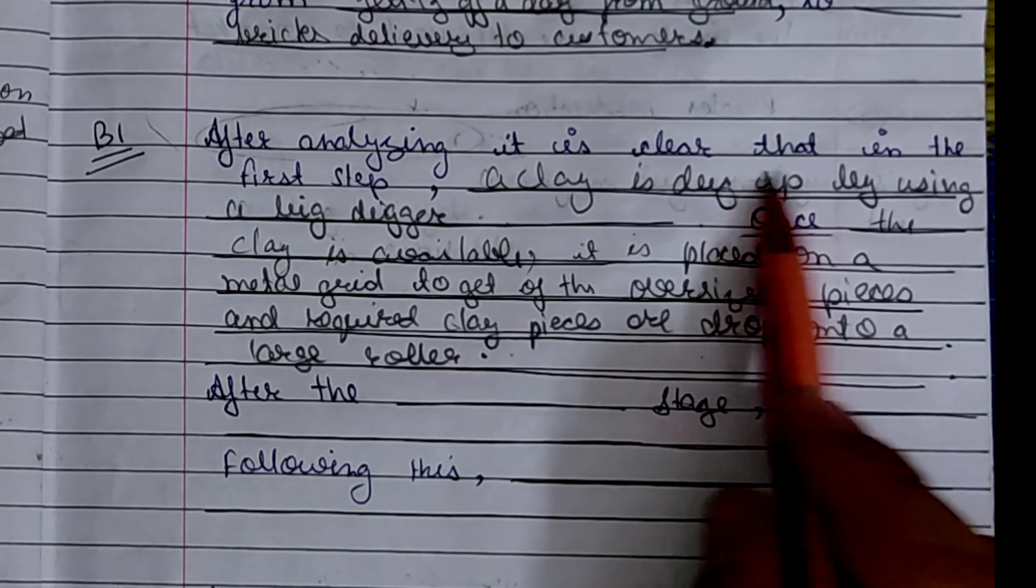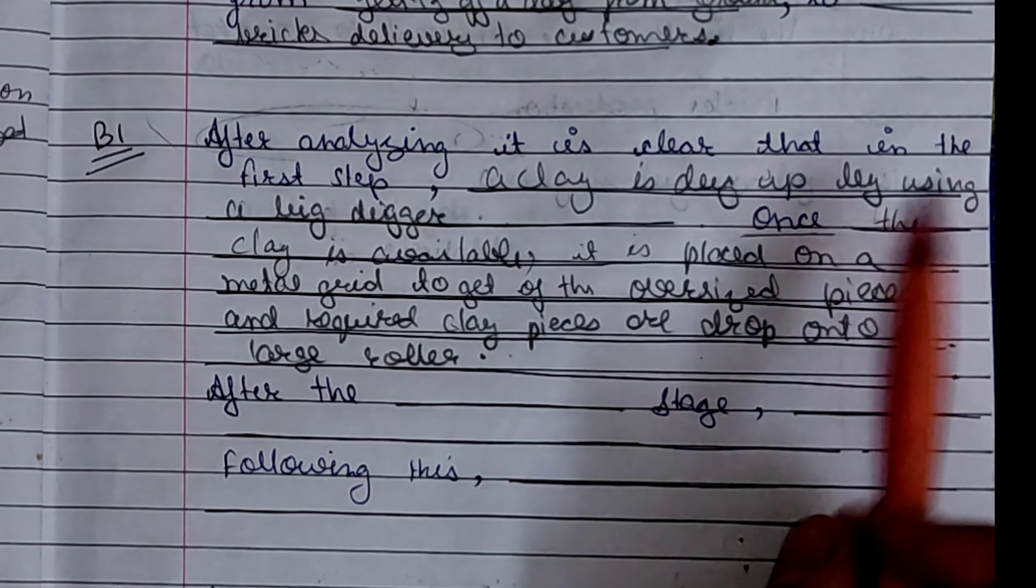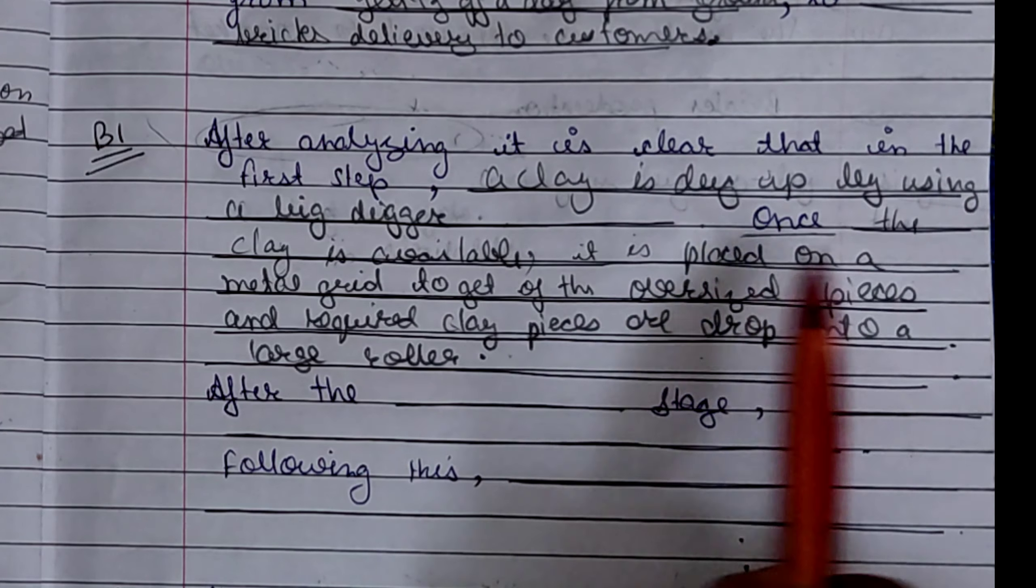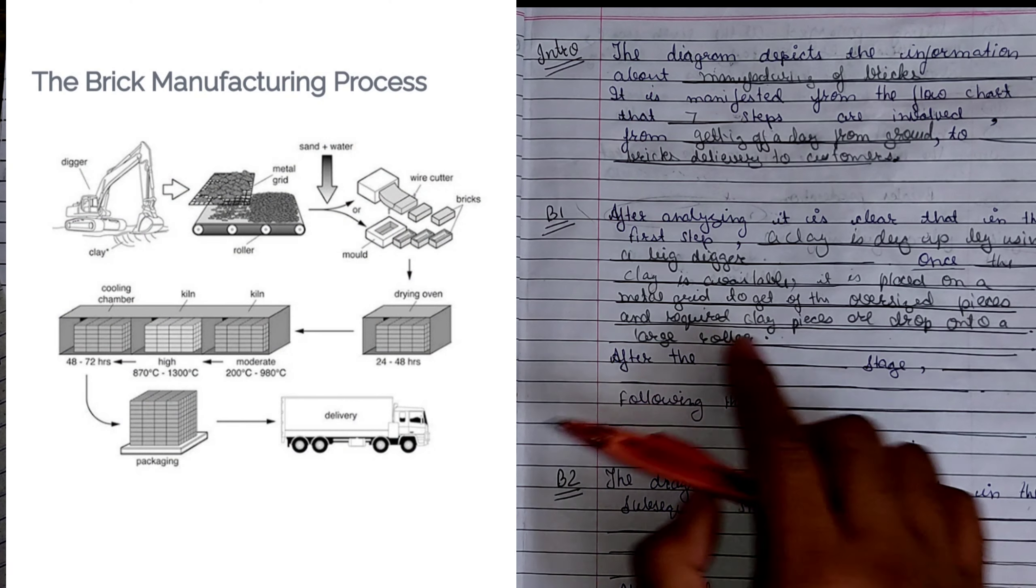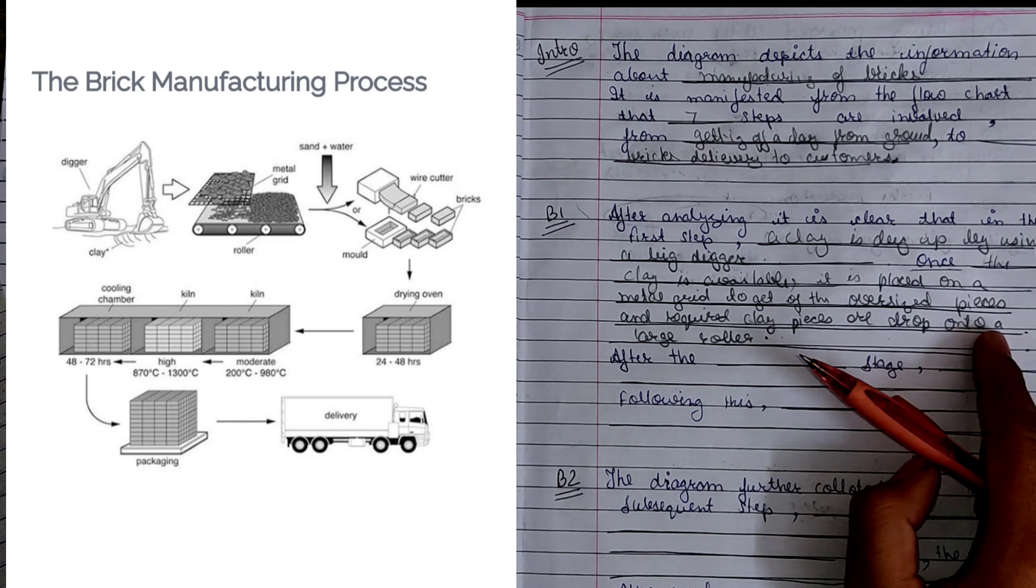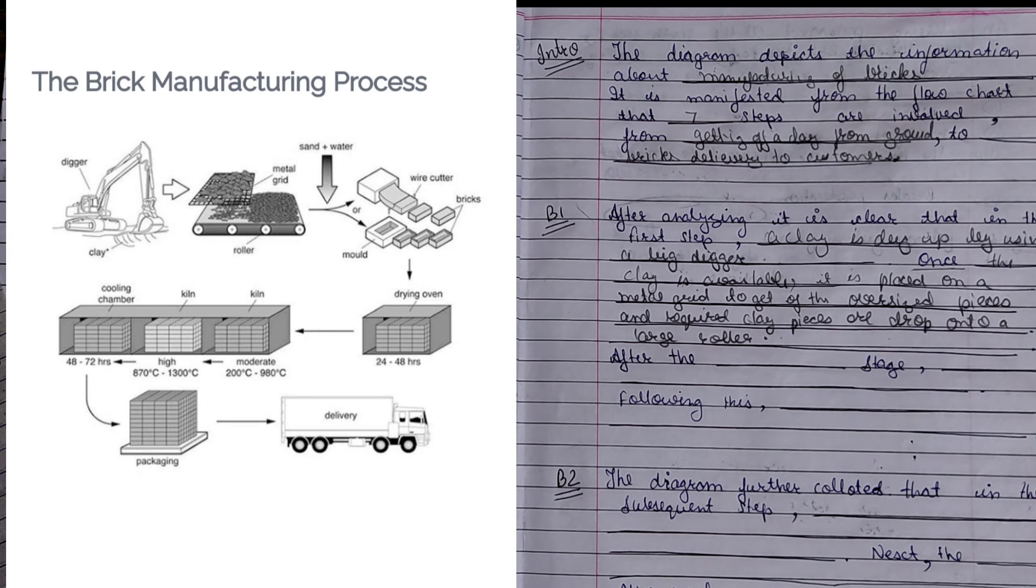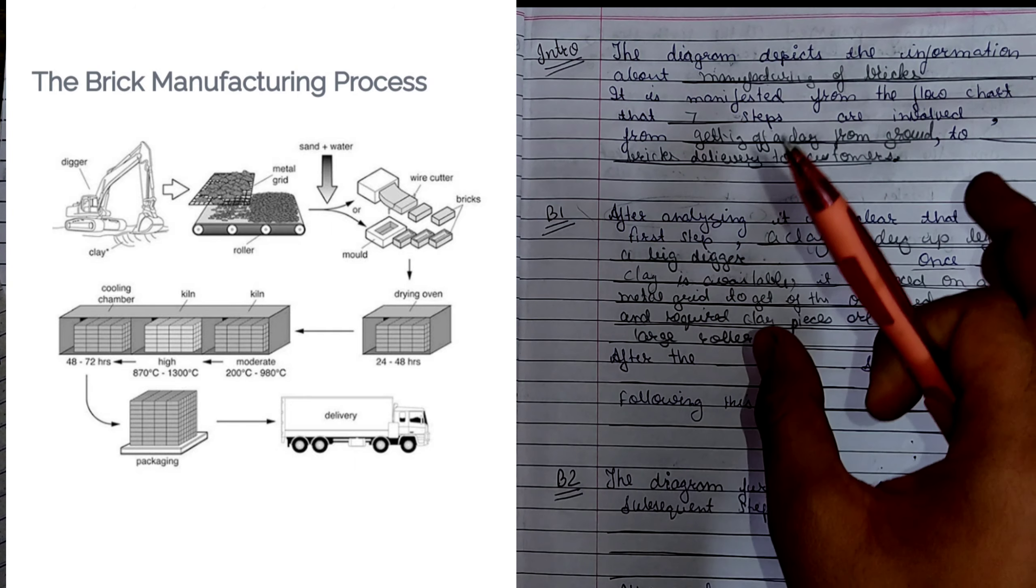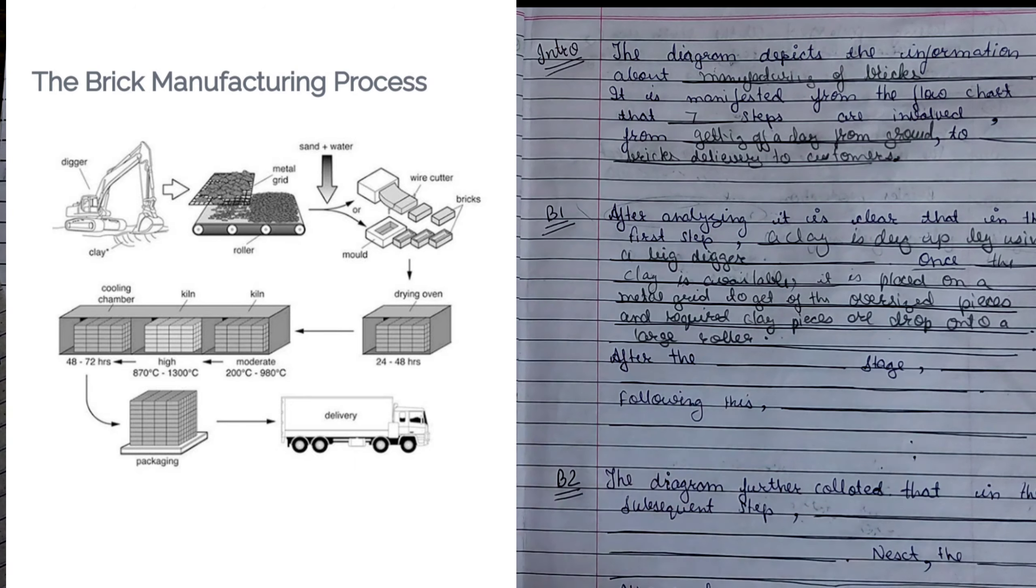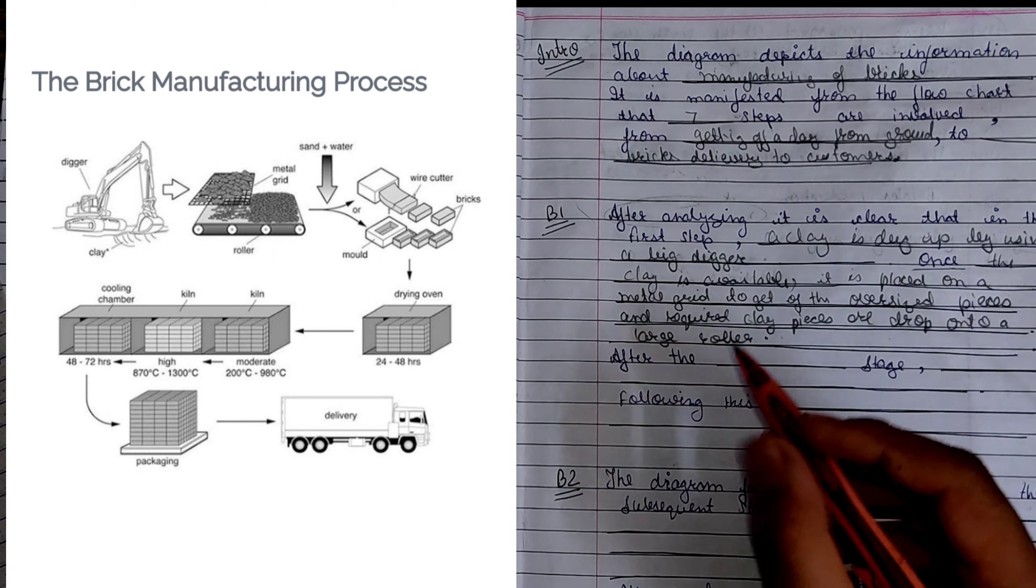By a large roller we have separated the small pieces and large pieces. Now after that, the first step, a clay is dug up by using a big digger. Once the clay is available, it is placed on a metal grid to get rid of oversized pieces and required clay pieces are dropped into a large roller.